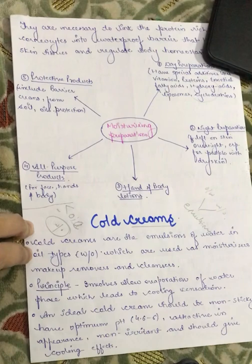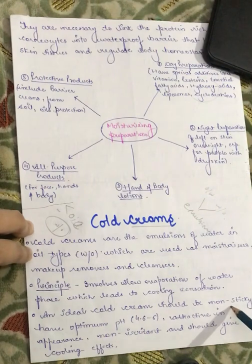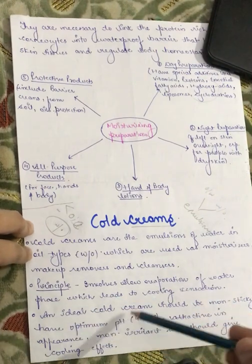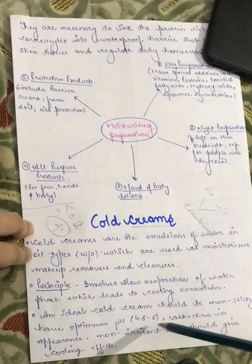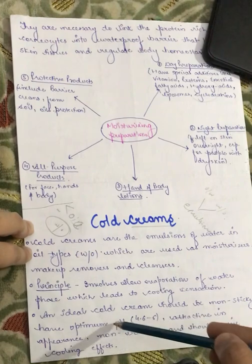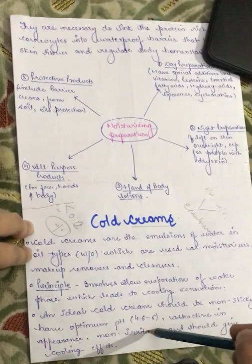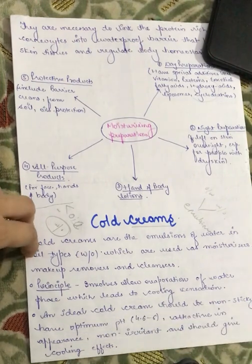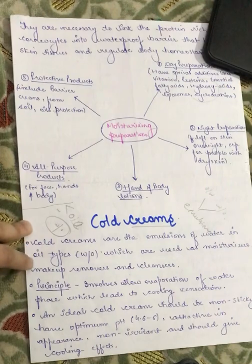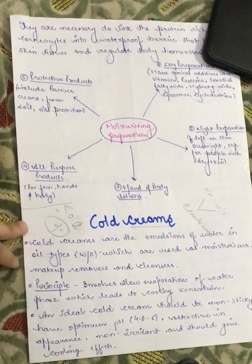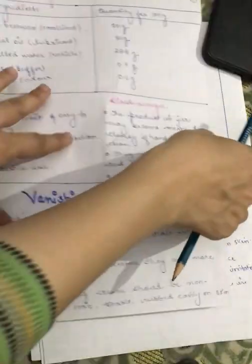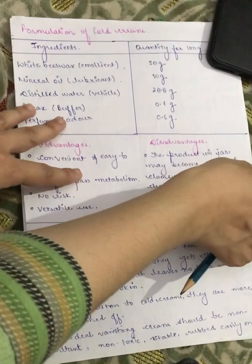An ideal cold cream should be non-sticky. It should have an optimum pH between 4.6 to 6. It should be attractive in appearance, non-irritant, and give a cooling effect. These are the ideal properties of a cold cream.